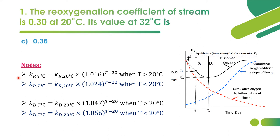These two formulas are regarding the reoxygenation coefficient. Looking at the oxygen sag curve diagram, the blue broken line represents the reoxygenation curve, and the slope or rate of that curve is the reoxygenation coefficient. The red broken line represents deoxygenation, given by kd.